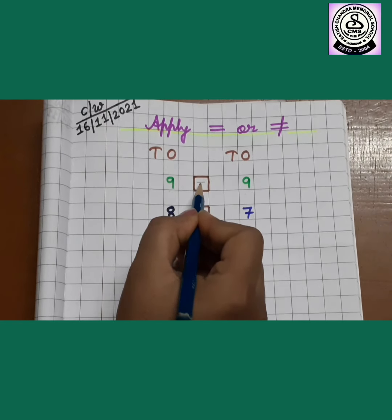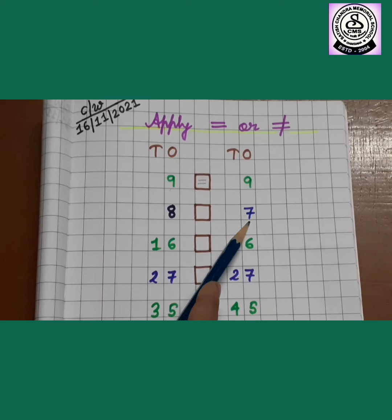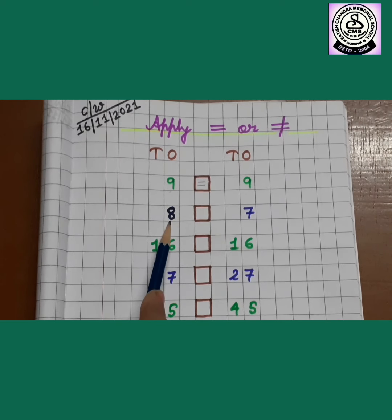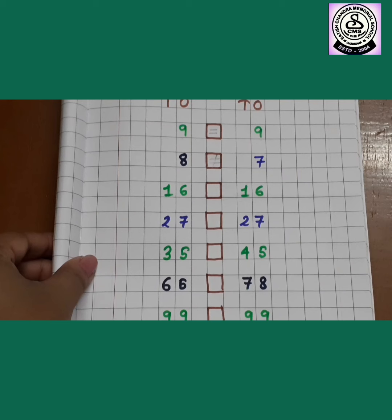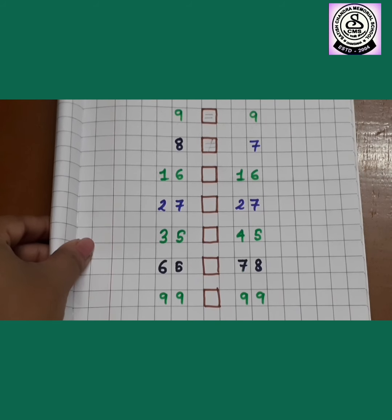Now next one, 8, 7. 8 and 7 are the same? No, 8 is more, 7 is less. So that is why they are not same, not equal. So let's draw the not equal sign. So like this you will complete the whole classwork.